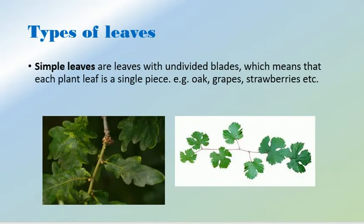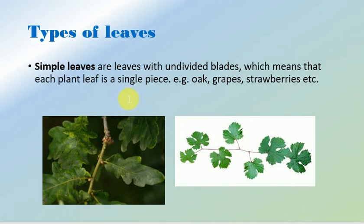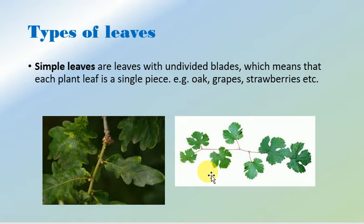Let's start with the simple leaf. As discussed, a leaf in which the leaf blade remains undivided and becomes a single unit is known as a simple leaf. This is the image of the oak leaf and this is the image of the grape leaf — both are simple leaves.